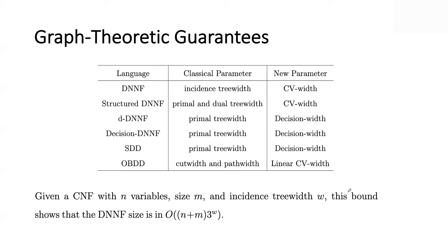These guarantees are usually exponential only in tree width, path width, or cut width. If you have a graph abstraction with bounded tree width, you're in good shape. Here's an example of what a result looks like: given a CNF with n variables and size m, and incidence tree width w of the incidence graph, you can get a DNNF circuit whose size is within a certain complexity — linear in the size and exponential in tree width. There are also newer parameters: CV width, decision width, linear CV width, introduced in Umut's thesis, which are more refined and lead to tighter bounds.